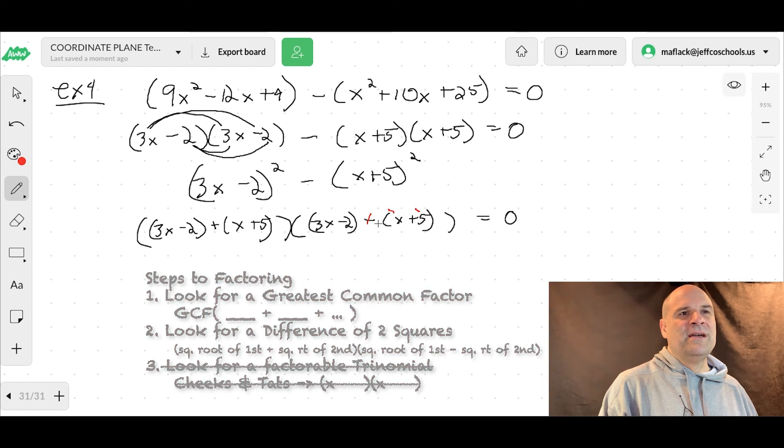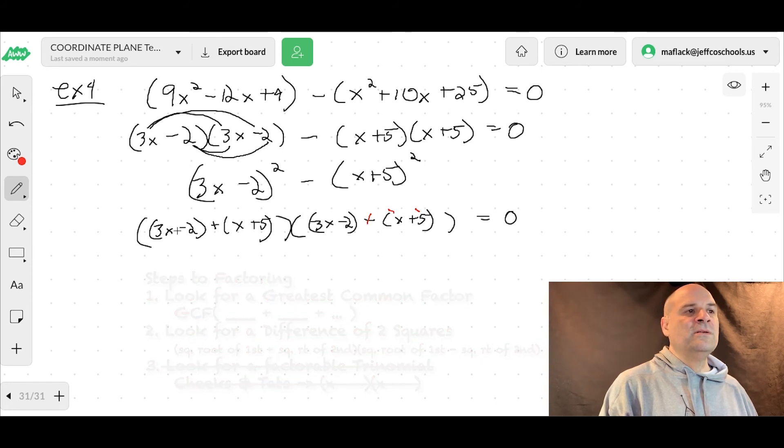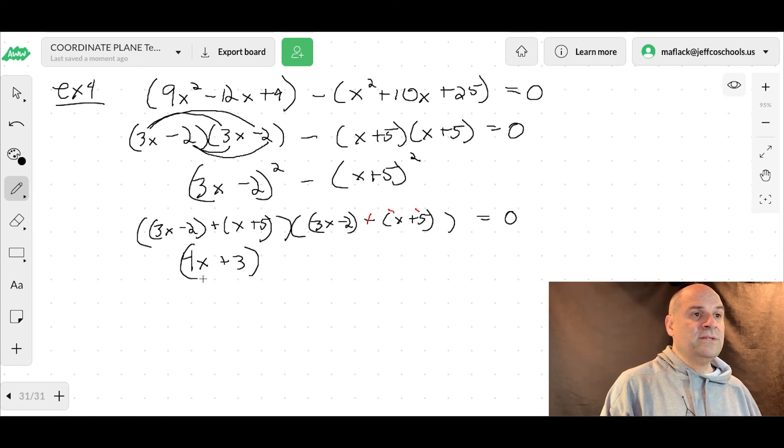So now, since everything is addition, we can ignore the parentheses. So we're going to simplify inside the parentheses here. So 3x and x is 4x. So we're adding, we're not multiplying. So we're just combining like terms. So 3x and x make a 4x, and then negative 2 and a 5 make a 3. Okay, and that's all times. All right, that's a 3x. It looks like a negative 3, but it's not. So 3x and negative x is 2x. Then negative 2 and negative 5 is negative 7. So that equals 0.